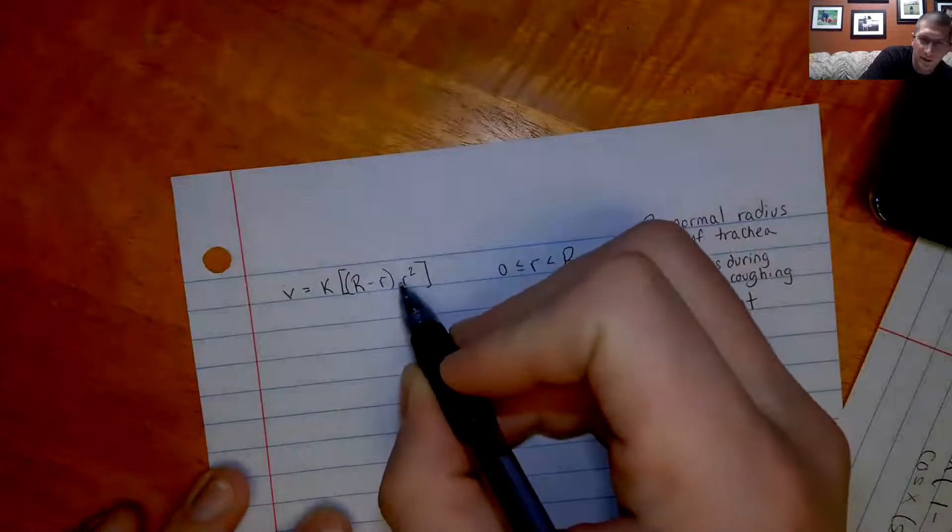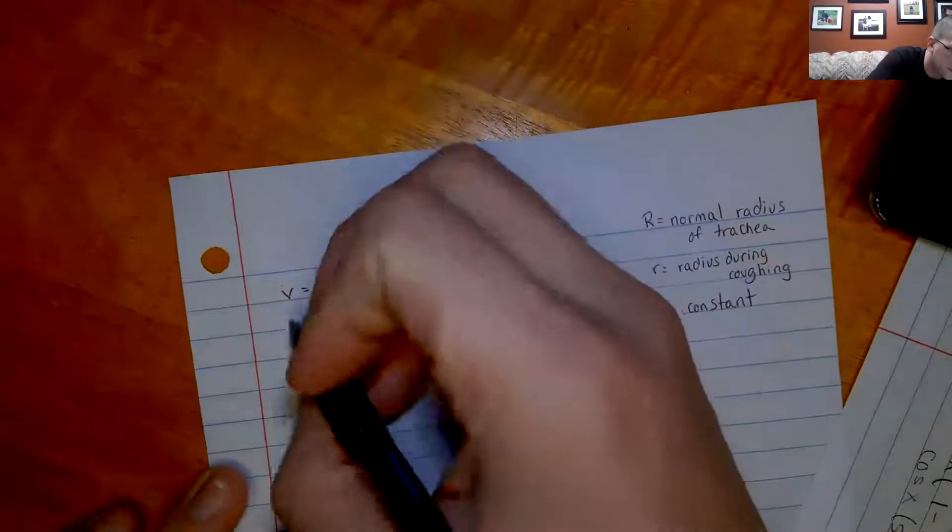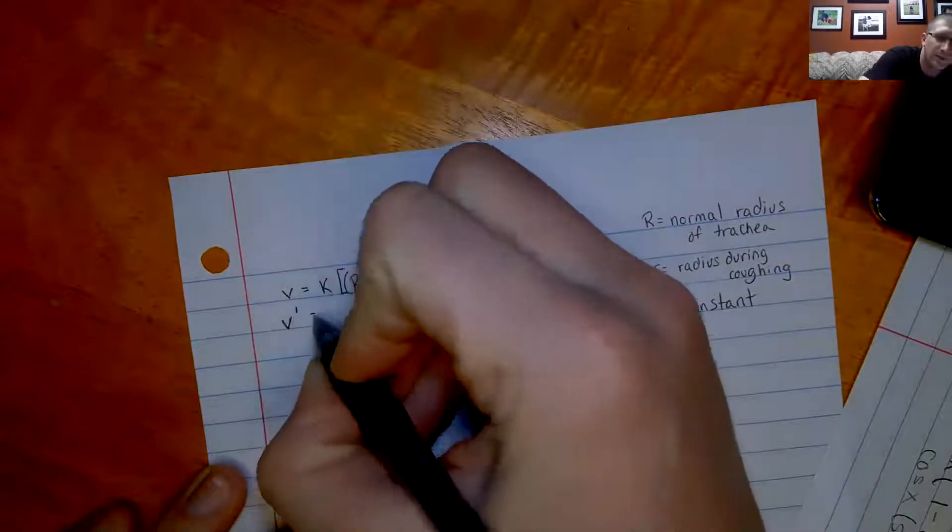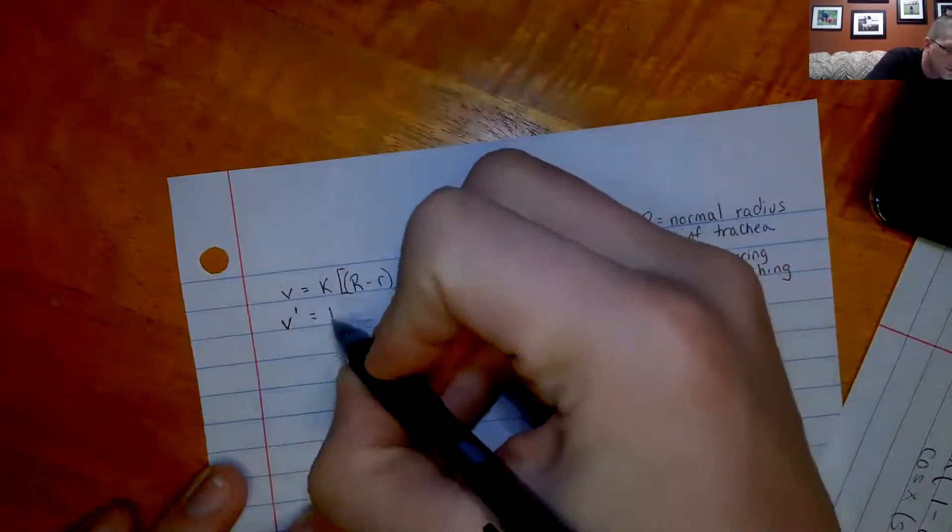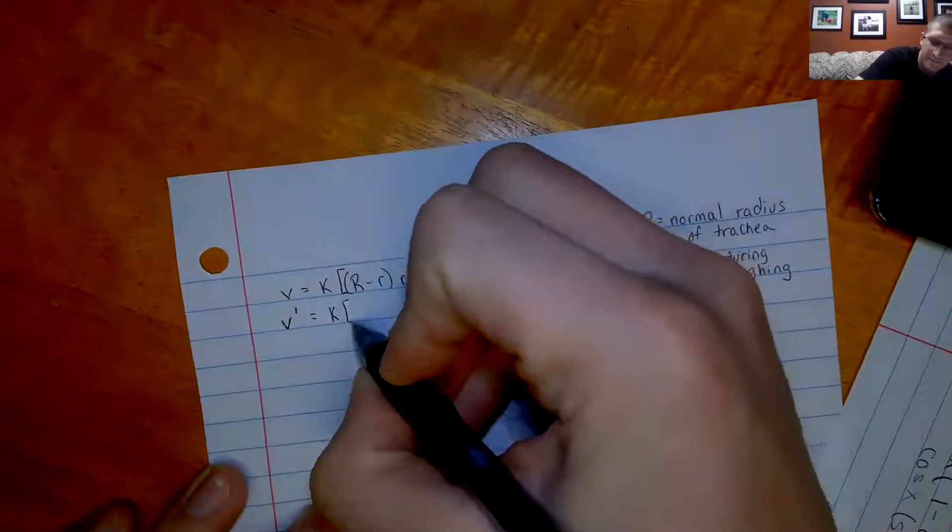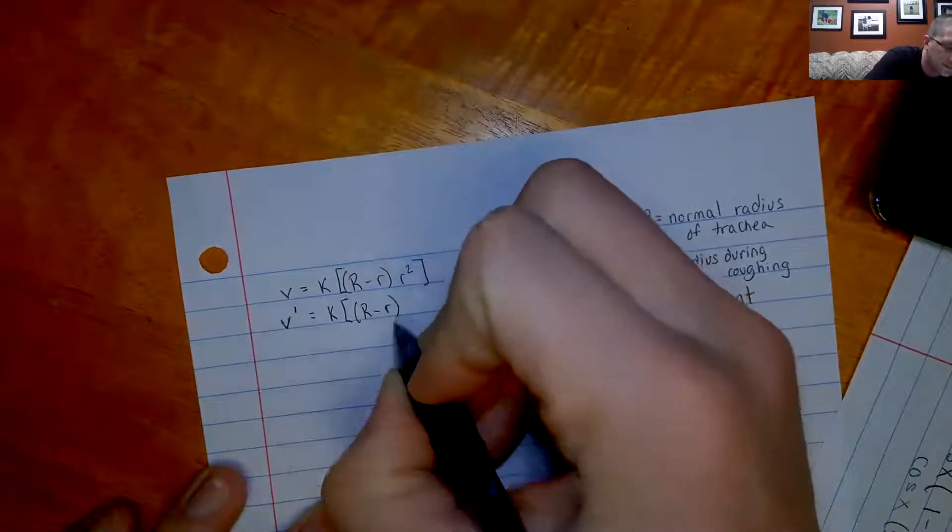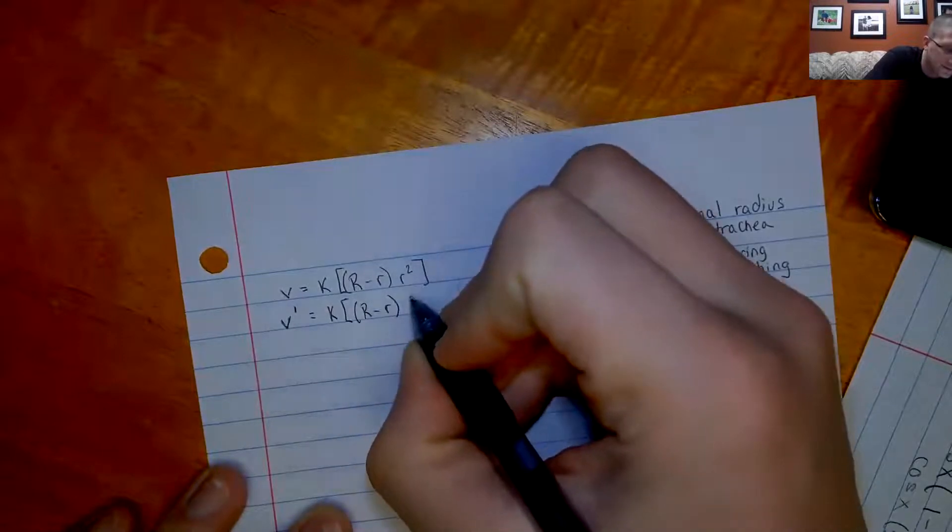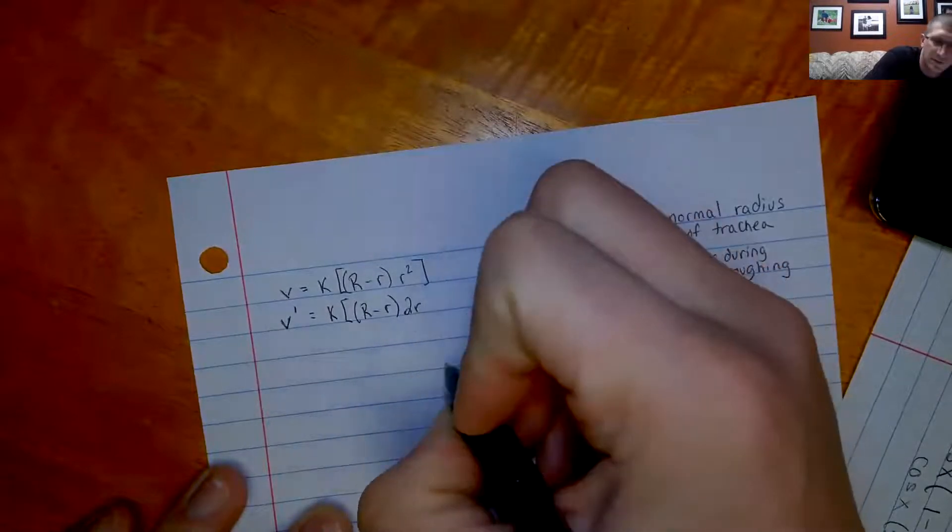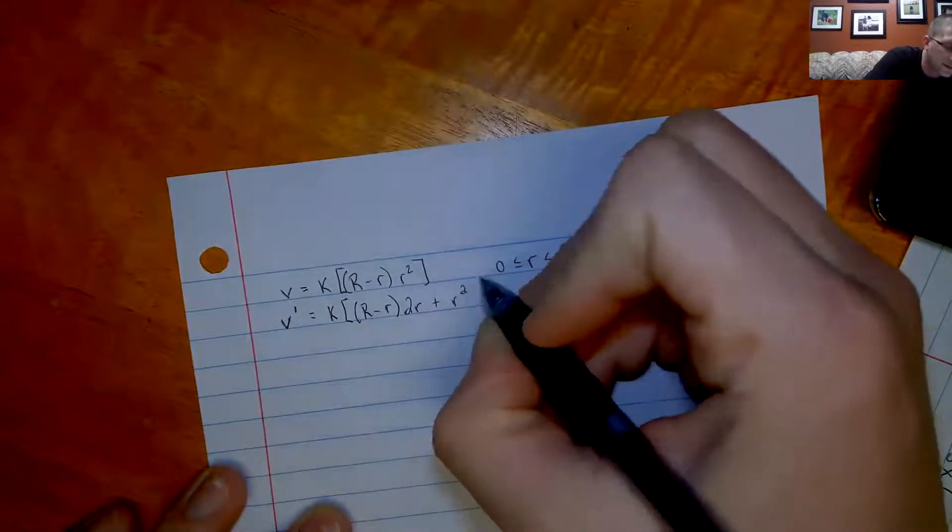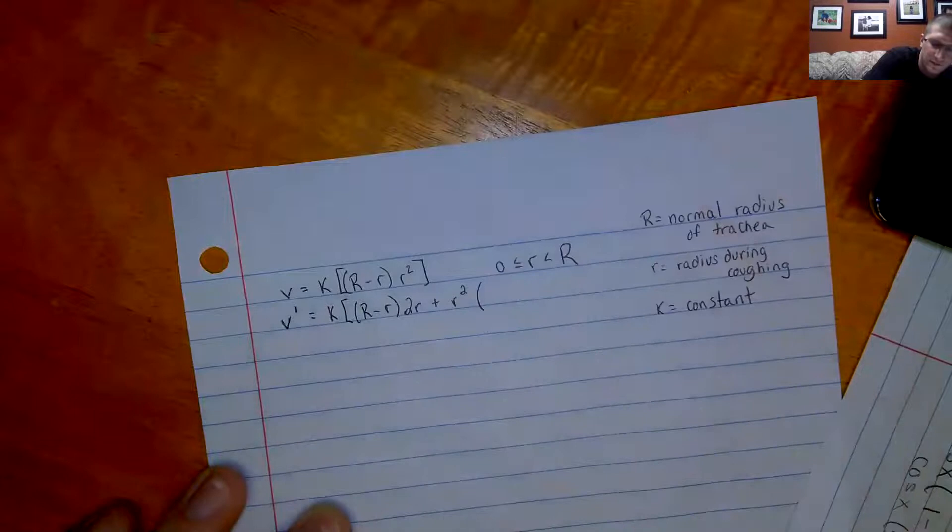In here, we have two things multiplied together. So we're of course going to use the product rule. So the derivative of v, we'll call v prime. We have our constant k, and then the product rule: we'll take first times the derivative of the second, the derivative of r squared would be 2r, plus the second r squared times the derivative of the first.